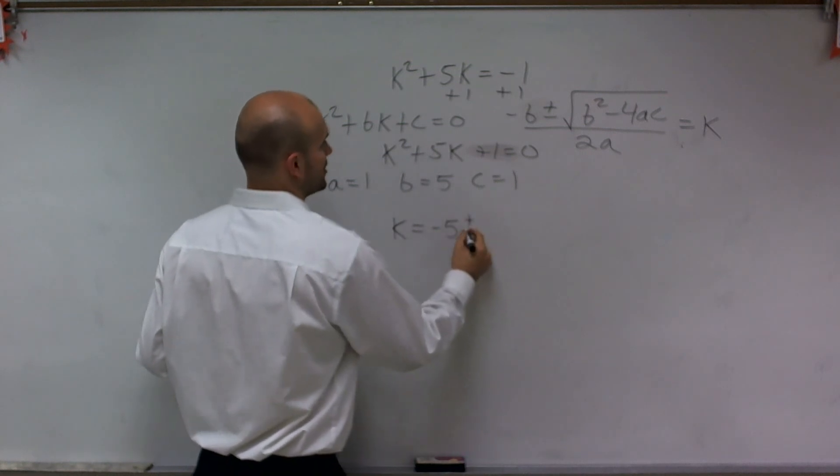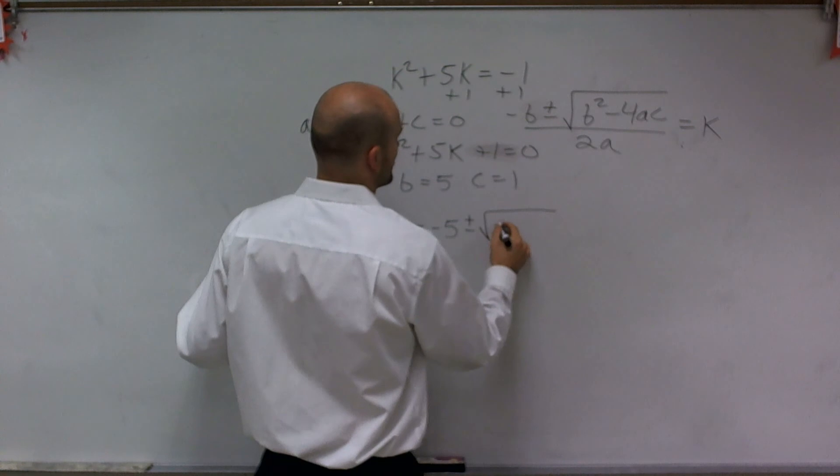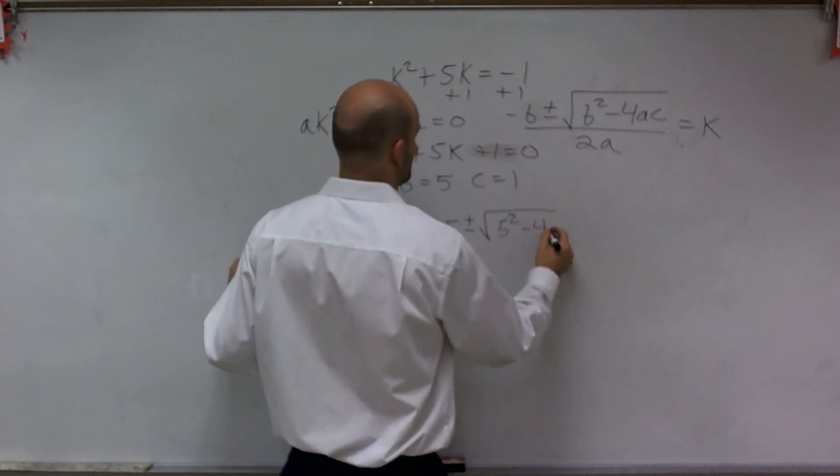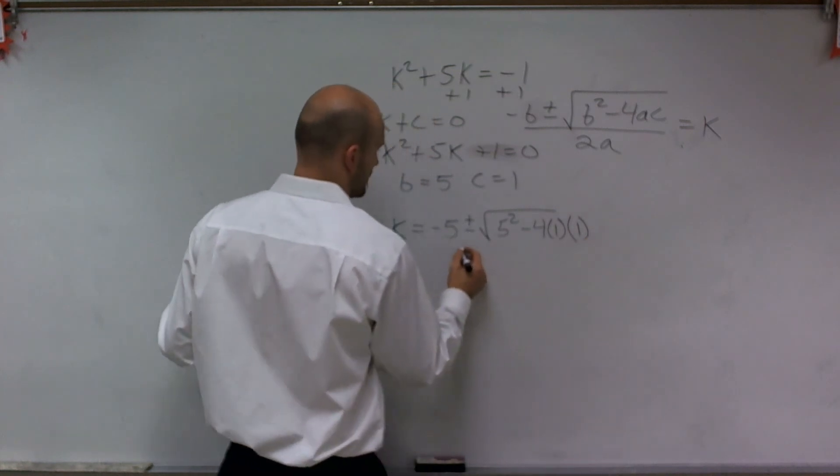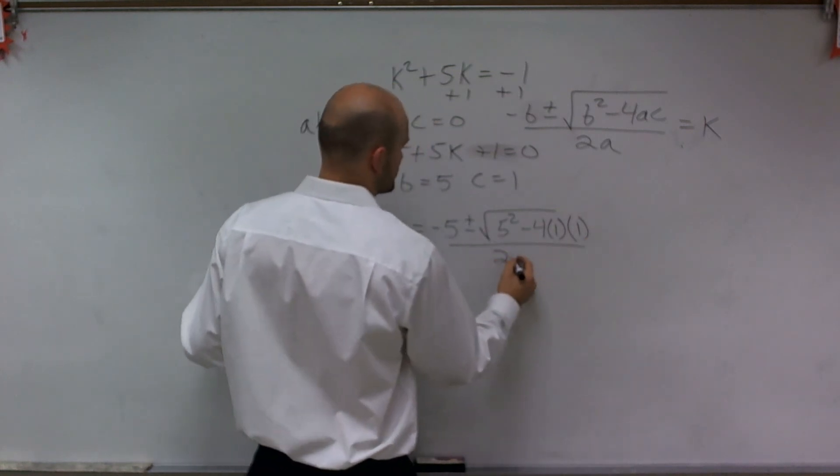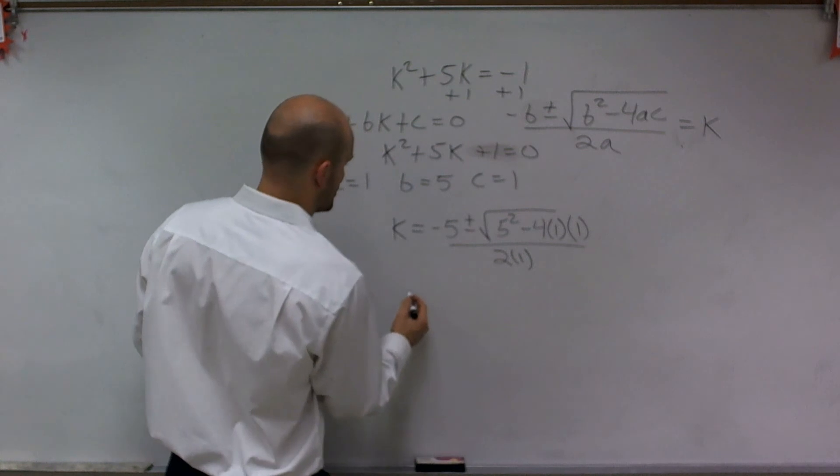which would be a negative 5, plus or minus the square root of 5 squared minus 4 times a times c, which is 1 as well, all divided by 2 times 1.